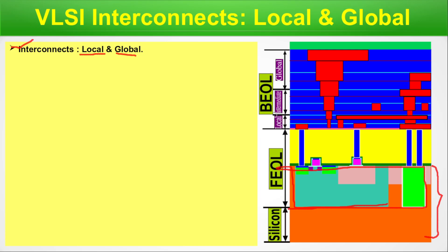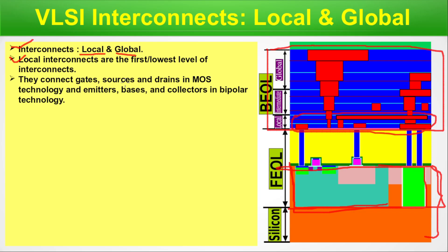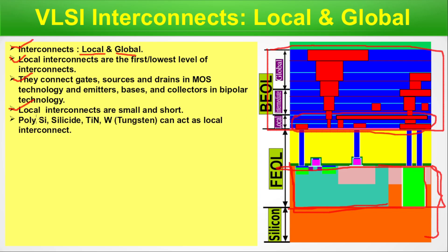The steps to fabricate active regions and interconnects are completely different; their position differs, and so their issues and concerns are also different. Local interconnects are the first or lowest level of interconnects — they are short and cover short distances. They connect gate, source, and drain in MOS technology, and emitters, base, and collectors in bipolar technologies. Local interconnects can be made of polysilicon, silicide, titanium nitride, or tungsten.